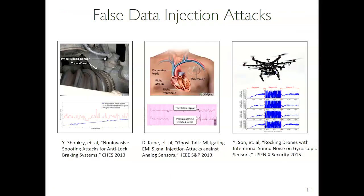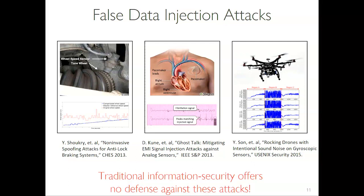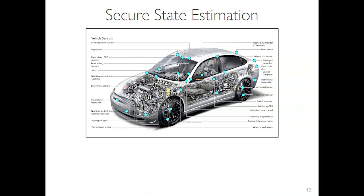After we published this paper, similar ideas appeared in other domains — biomedical devices, quadrotors, and more. What is interesting about all these attacks is that traditional information security offers no defense, because the attack happens in the analog domain before the signal is translated into the digital domain. Encryption, firewalls, and so on cannot detect such attacks because the data has been corrupted before it reaches the cyber domain. This motivates the need to analyze collected data to identify whether it is under attack.